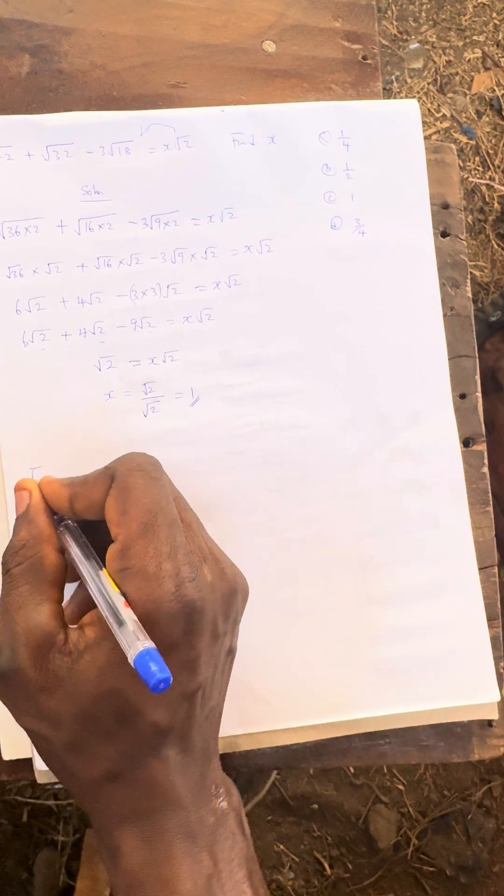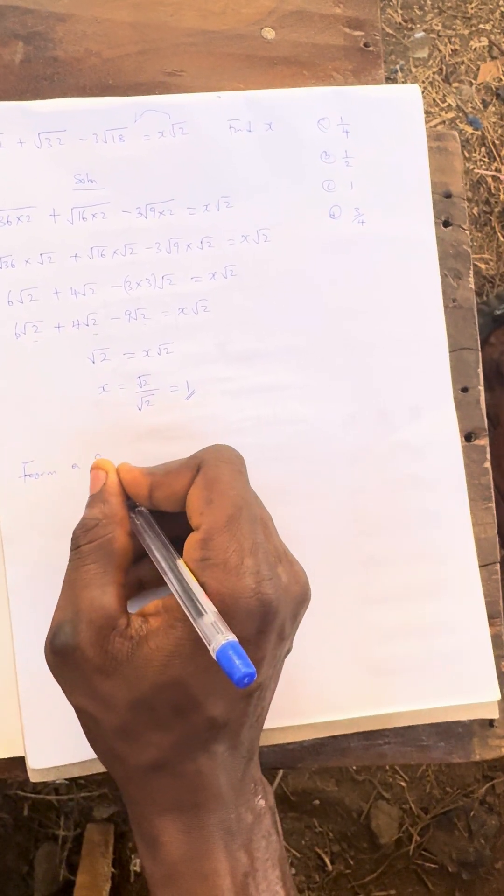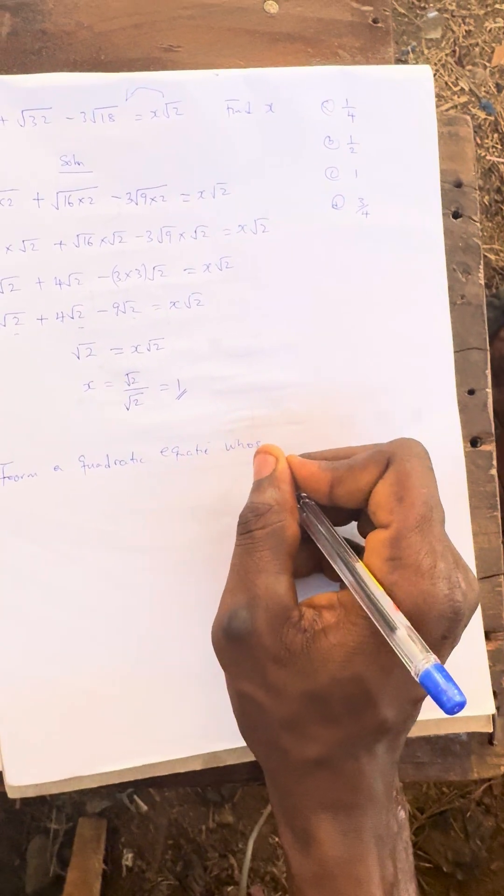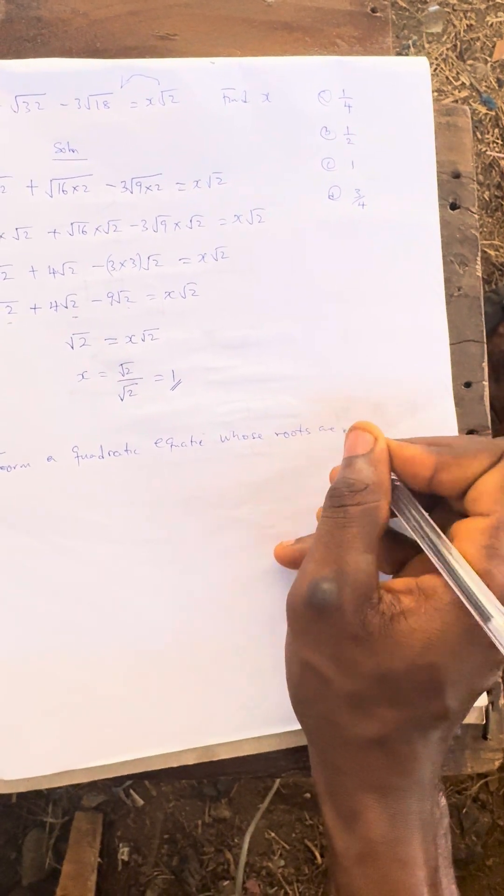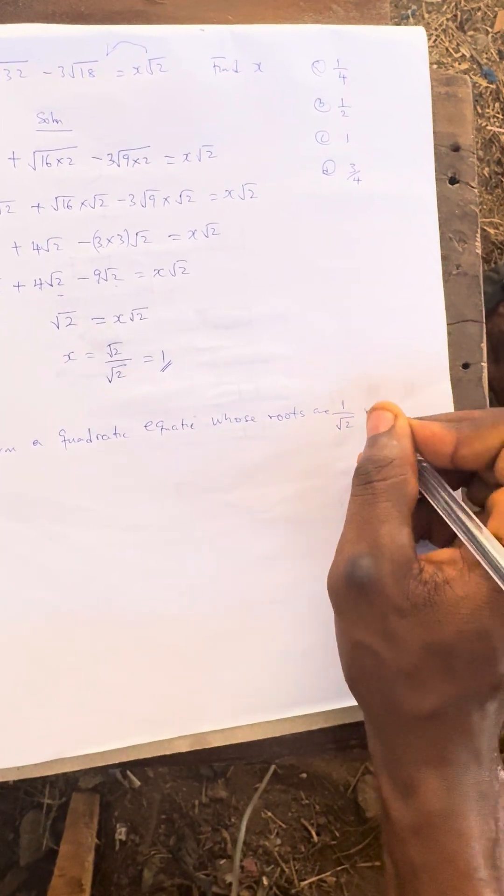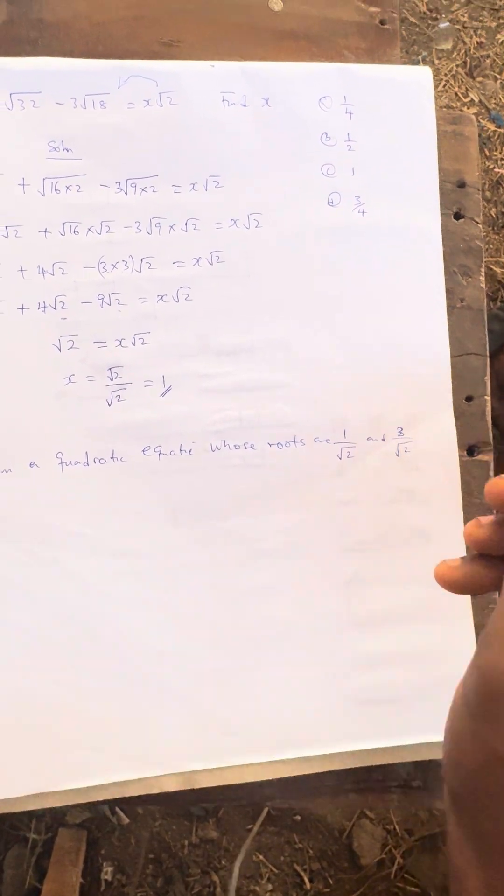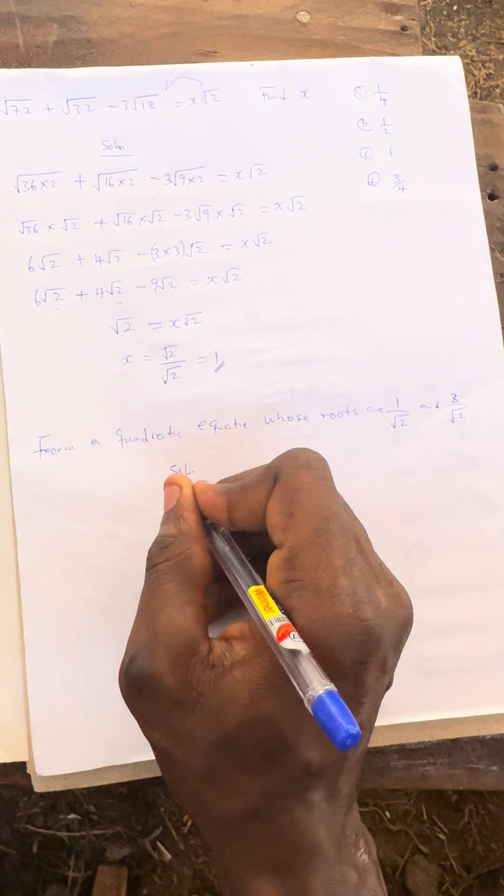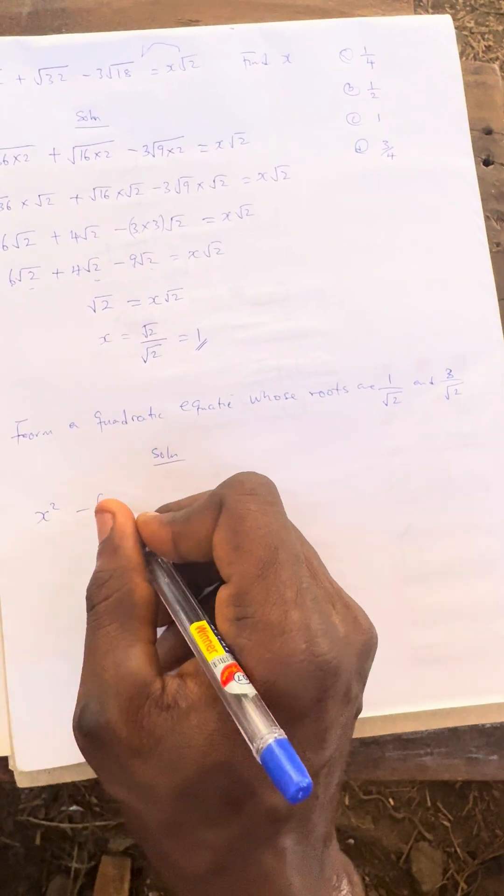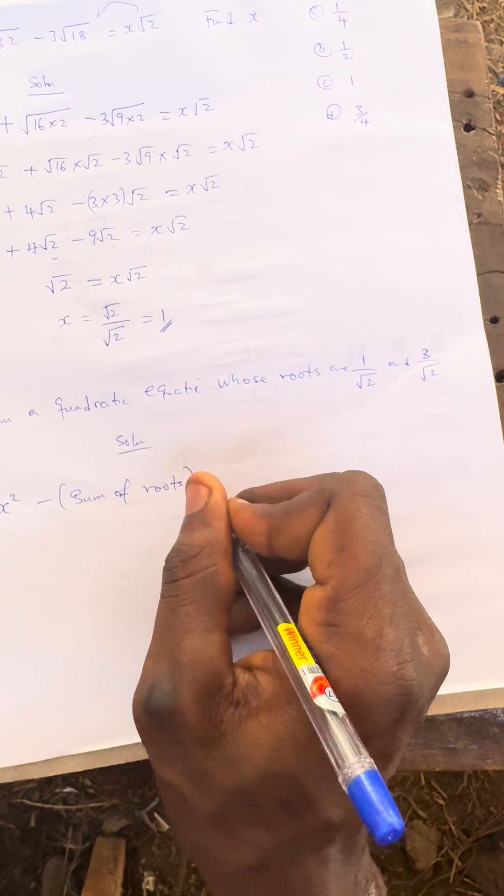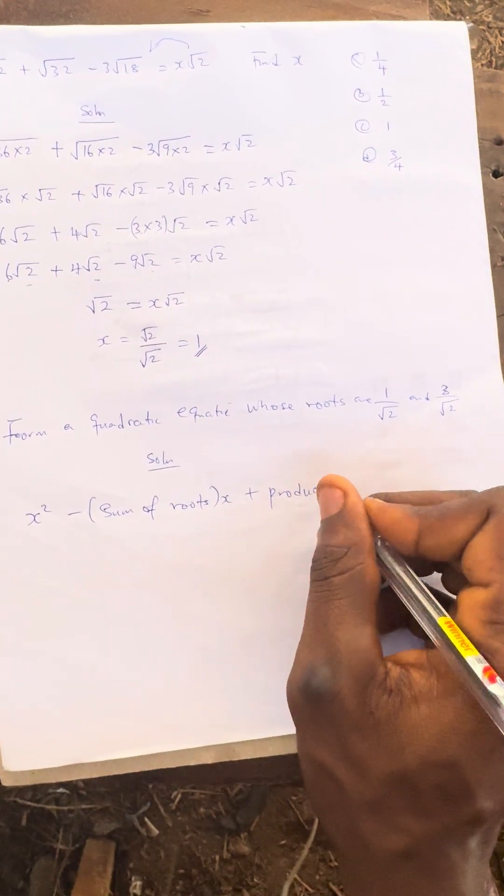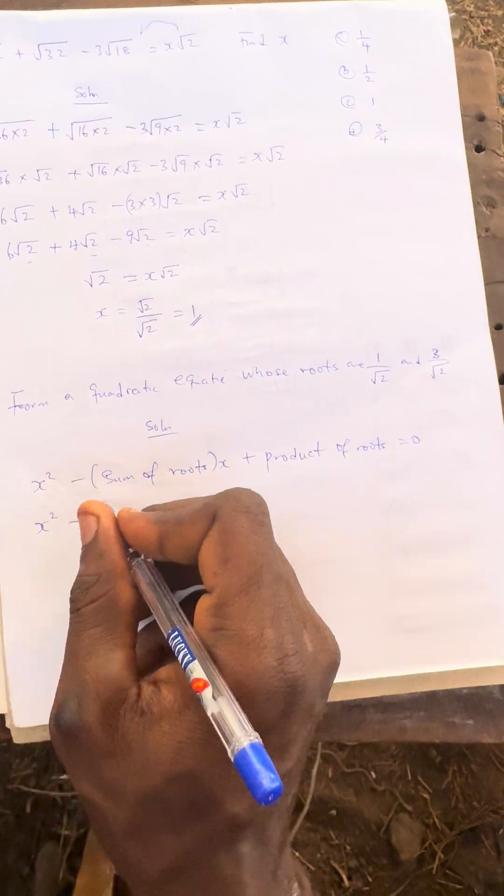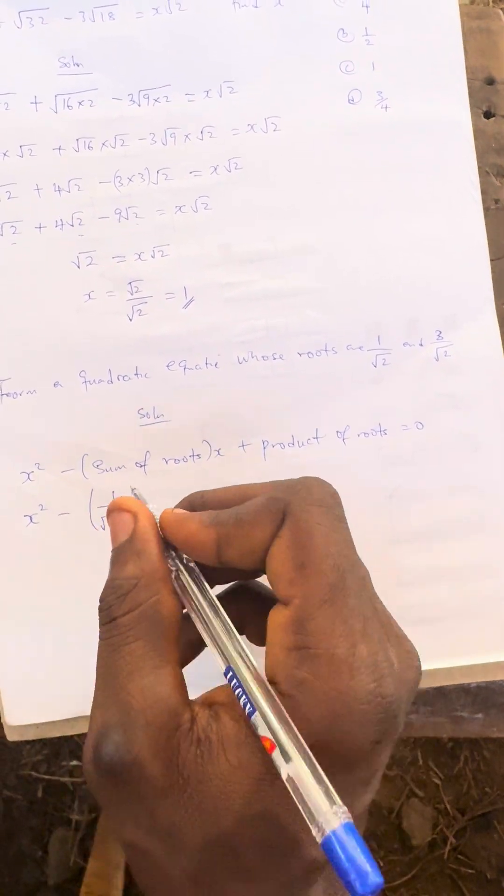The question says to form a quadratic equation whose roots are 1/√2 and 3/√2. The formula is x² - (sum of roots)x + (product of roots) = 0.